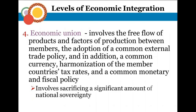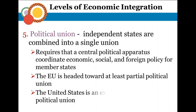The next level is a political union, in which a centralized political government is formed to coordinate economic, social, and foreign policy for all member states. The EU is heading toward a political union — they have a European Parliament, which has been directly elected by the citizens of EU countries since the late 1970s. The United States is actually a good example of a political union, made up of independent states under a single nation and currency.